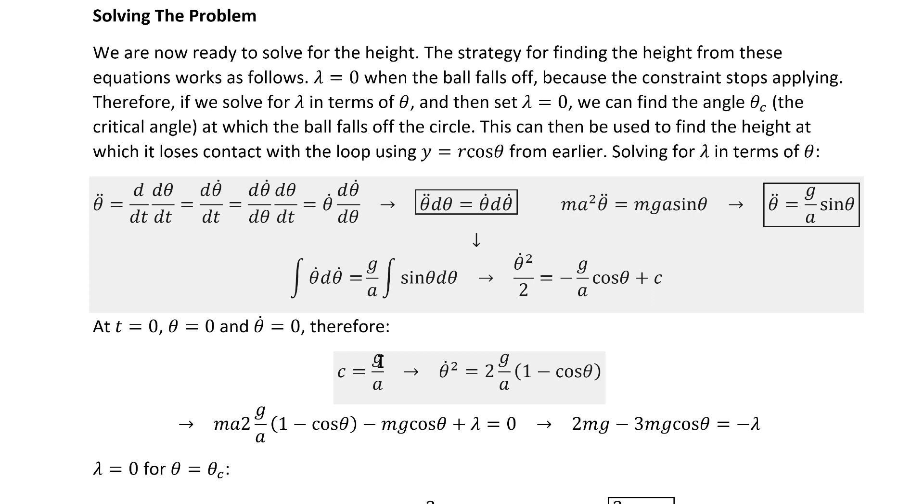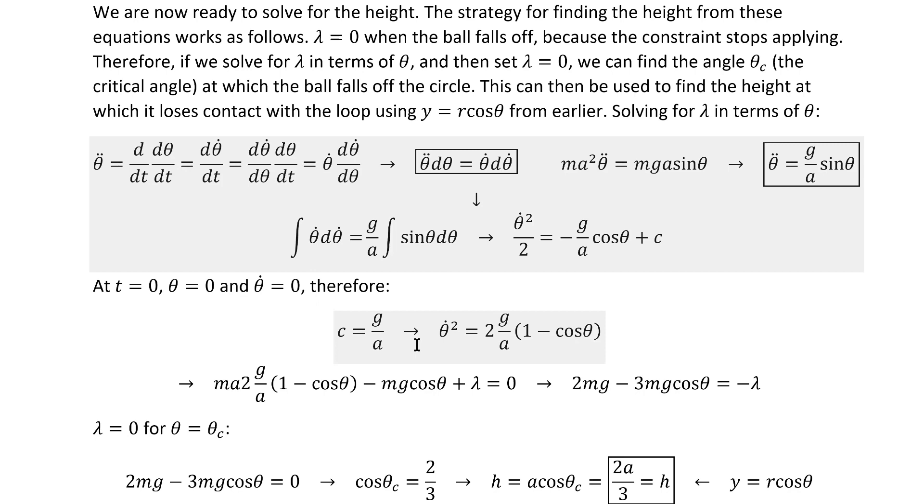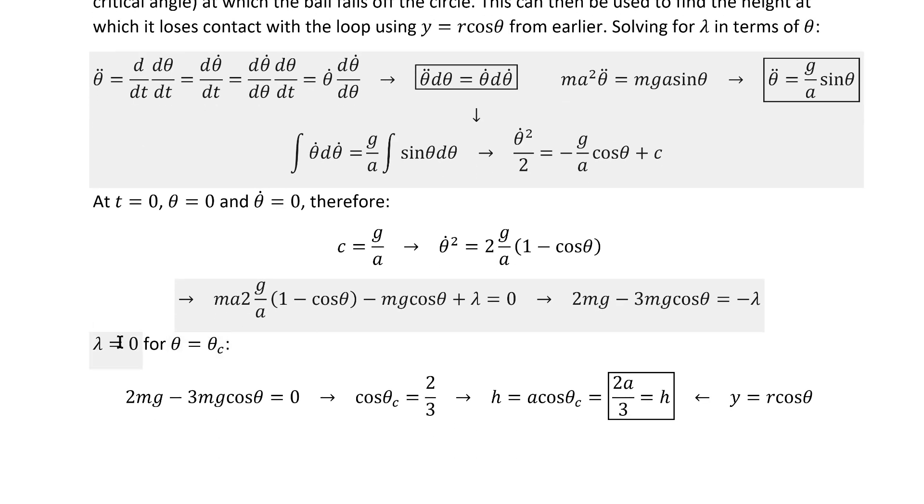This means this constant c must equal g over a for the whole thing to be consistent. We can then insert this back into the first equation, ultimately getting us this equation for lambda in terms of theta, which is what we were going for. We've already argued that lambda equals zero gives us the critical angle, so all we have to do is apply that to this equation and get solving. We find that the critical angle is the arc cosine of two-thirds, which implies that the height we're looking for is 2a over three, and that's our final answer.